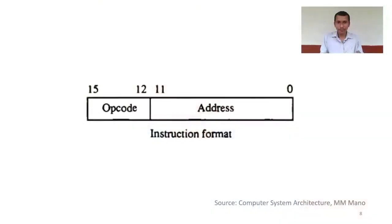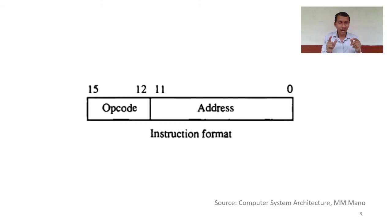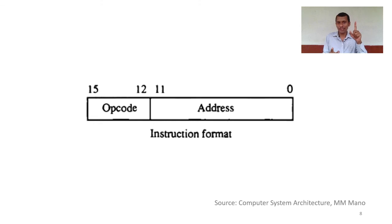That specific format is known as the instruction format. There can be many different instruction formats. Each processor can have its own format, and depending on our requirements, we can change the instruction format. The internal structure of an instruction — what is contained in it — can also cause the format to vary. So instead of studying instruction formats of all processors, we will stick to our basic computer.